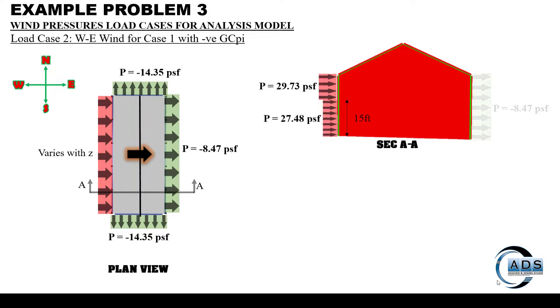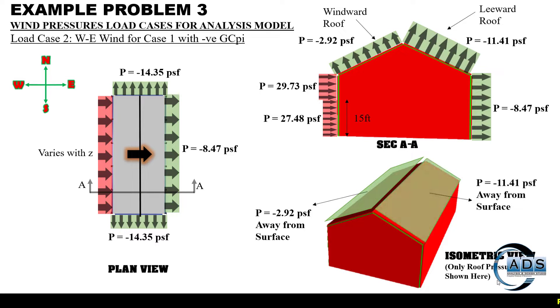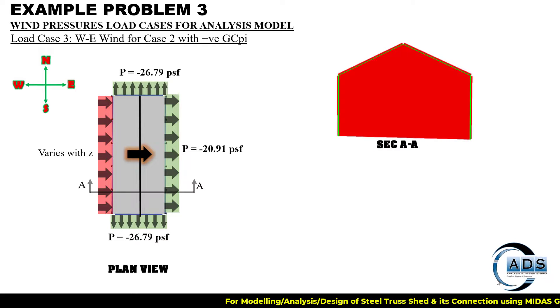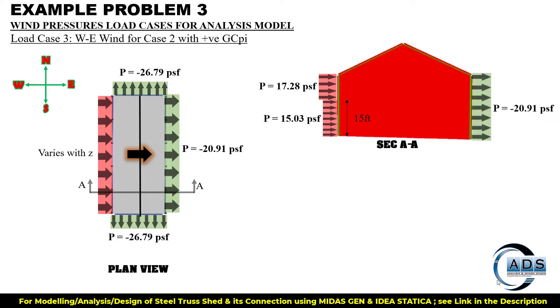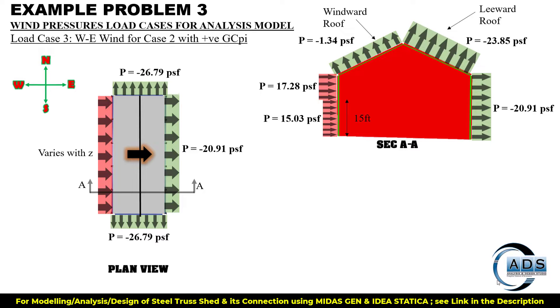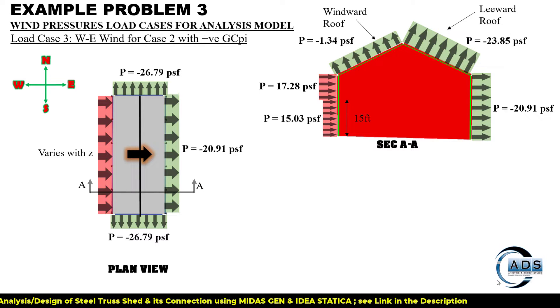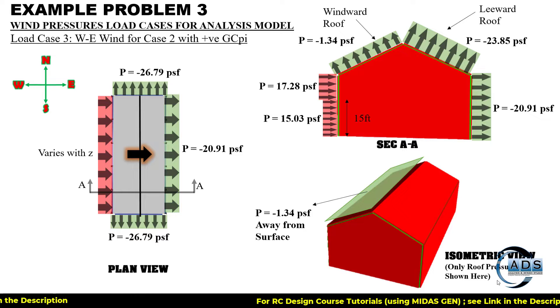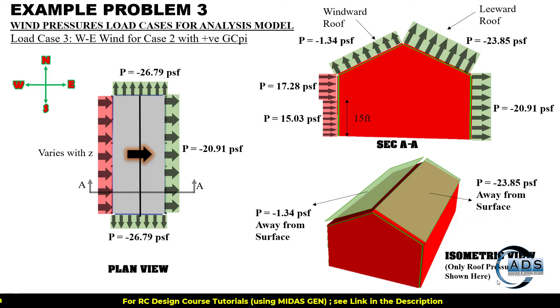For load case 2, similarly all values are with the negative GCpi. For load case 3, wind is blowing in the same direction but with case 2, which differs with respect to the Cp value. The windward roof pressure is slightly lower than the previous one but still carries a negative sign, meaning it acts away from the surface. Similarly for load case 4.